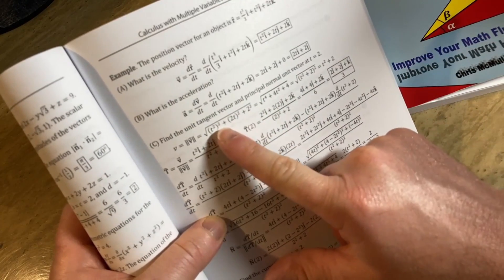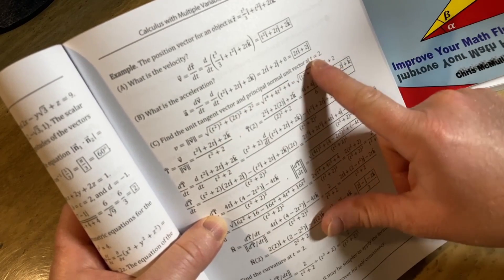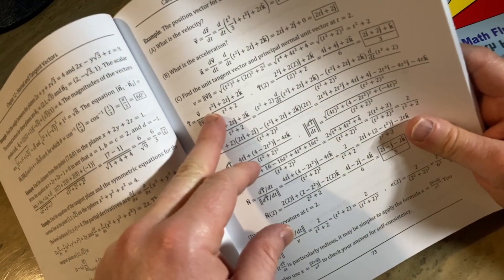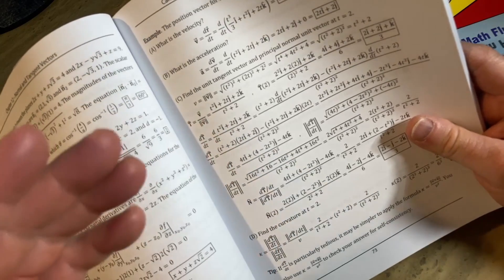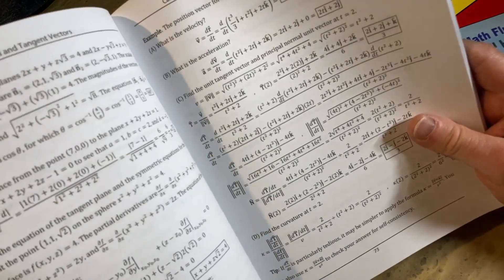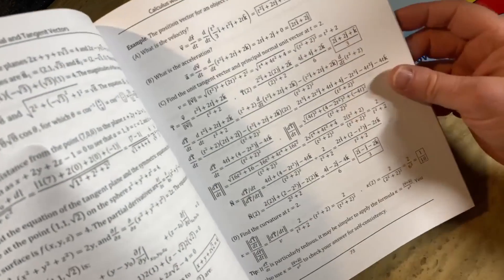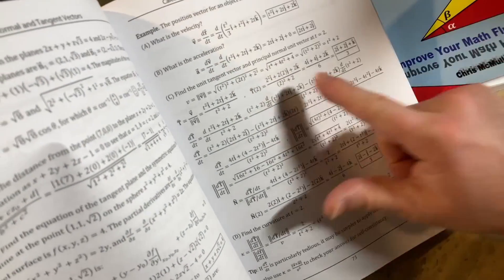And asks you to find the unit tangent vector and principal normal unit vector at t equals two. So yeah, to find the unit tangent vector they give you the formula here - basically you normalize the velocity vector, so you take the velocity vector and you divide it by its magnitude. And there is another formula here as well for the principal unit normal vector.